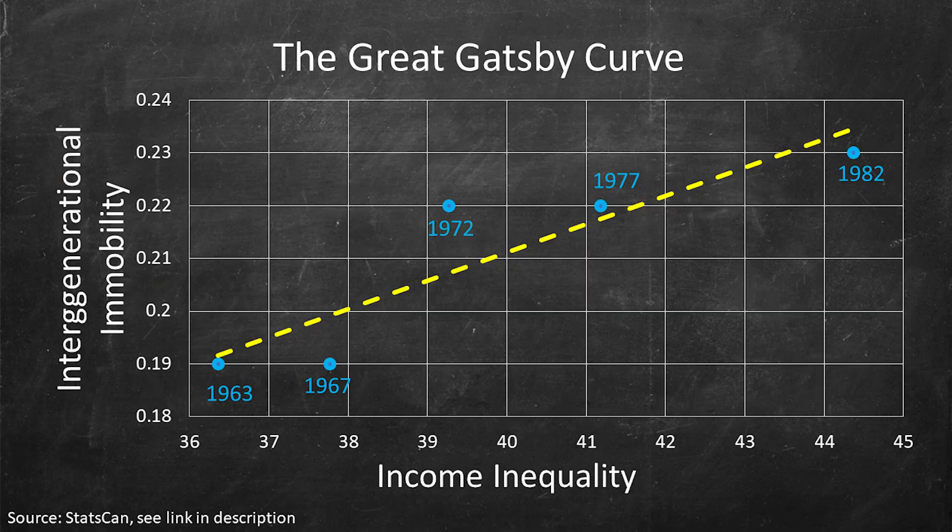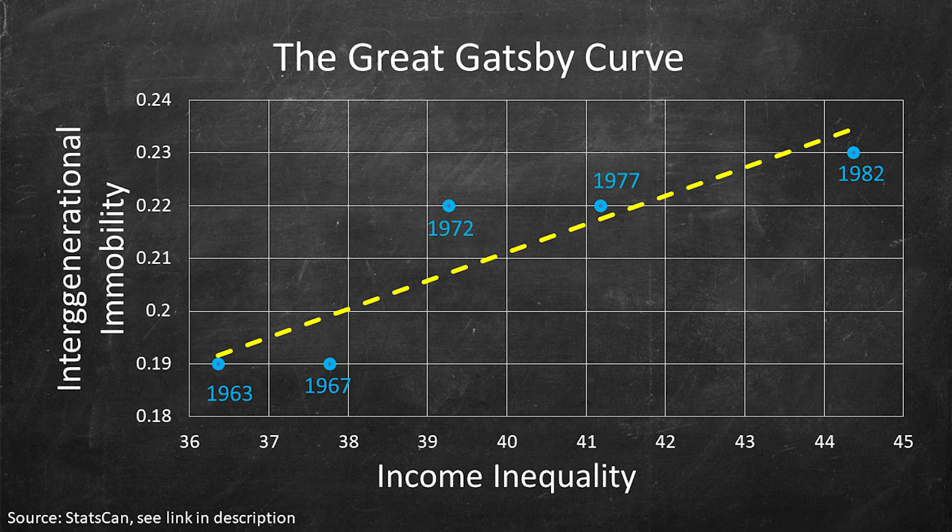And we're going to relate them with something called the Great Gatsby Curve. So this is sort of what it looks like for Canada. On the horizontal axis, we have the Gini coefficient, or in other words, our income inequality. And we've seen that in Canada, that's gotten larger as time's gone on. And then on the vertical axis, we have the intergenerational immobility. And likewise, we've seen that that has gotten higher as time has gone on as well. And so what this chart really shows is that Canada has so-called gone up the Great Gatsby Curve. We've gotten both more unequal and it's harder to change your income status relative to your parents, as time has gone on from 1963 up to 1982 birth years.